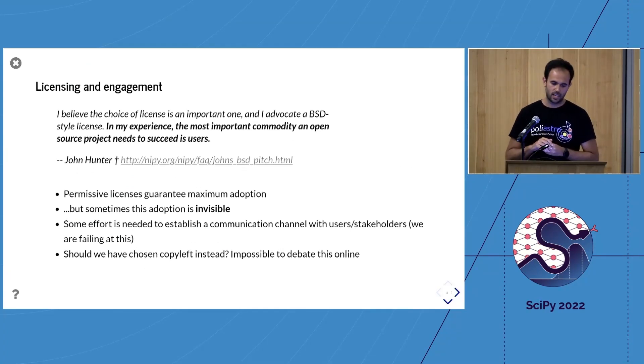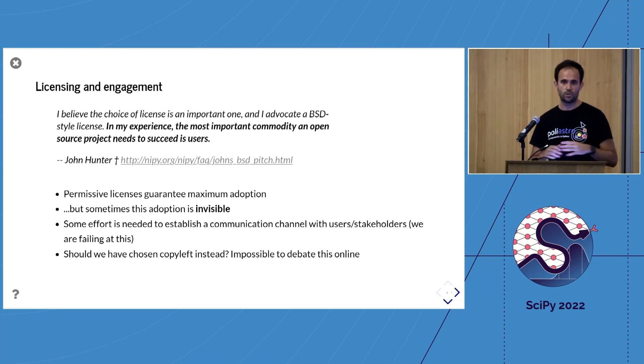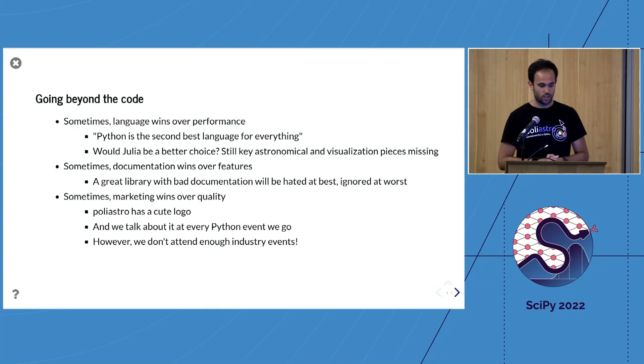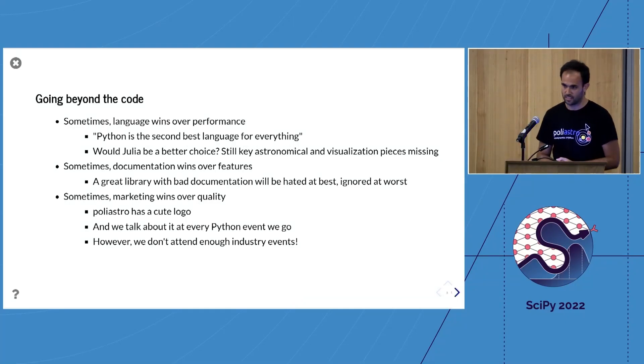There's a question about licensing. I'm a true believer of this John Hunter pitch for permissive licenses, and I really think it has helped PolyAstro thrive and get to many places. But at the same time, there's lots of commercial actors that use PolyAstro and we don't know anything about them. Sometimes I feel that it would be good to have better communication, and I'm not anymore sure that fully permissive licenses without any business model or anything like that is a sustainable way of having a project running for a decade.